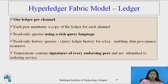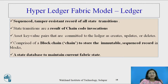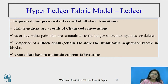The third element is the ledger: one ledger per channel. Each peer maintains a copy of the ledger for each channel. Read-only queries use a rich query language. Read-only history queries allow querying ledger history for a key, enabling data provenance scenarios. Transactions contain the signature of every endorsing peer and are submitted to the ordering service. The ledger is a sequenced, tamper-resistant record of all state transactions. Each transaction is a result of chaincode invocations. Asset key-value pairs are committed to the ledger as create, update, or delete operations. It comprises a blockchain to store the immutable sequence record in blocks, and a state database to maintain current Fabric state.